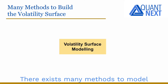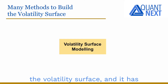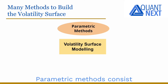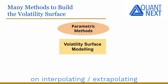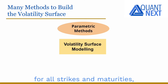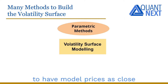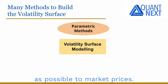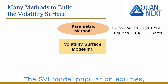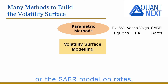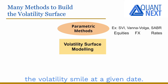There exist many methods to model the volatility surface, and it has been the topic of numerous research papers and books over the past decades. Parametric methods consist of interpolating or extrapolating the volatility surface for all strikes and maturities, or the volatility curve for a specific maturity, with a parametric model whose parameters are calibrated to have model prices as close as possible to market prices. The SVI model popular on equities, the Vanna-Volga method popular on FX, or the SABR model on rates are some examples of models to interpolate or extrapolate the volatility smile at a given date.